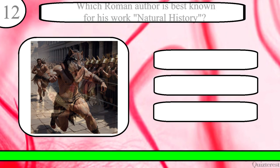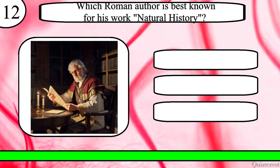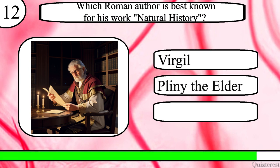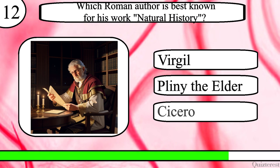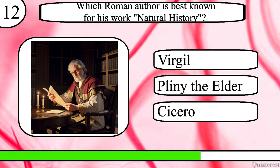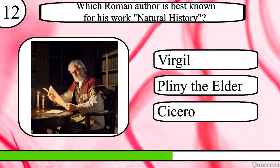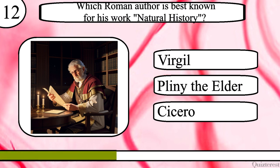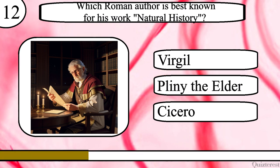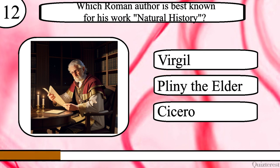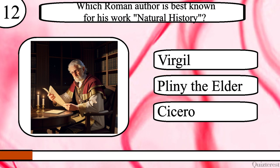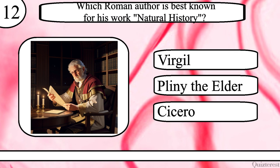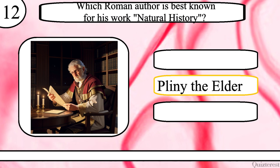Question 12. Which Roman author is best known for his work Natural History? Virgil, Pliny the Elder or Cicero? The correct answer is Pliny the Elder.